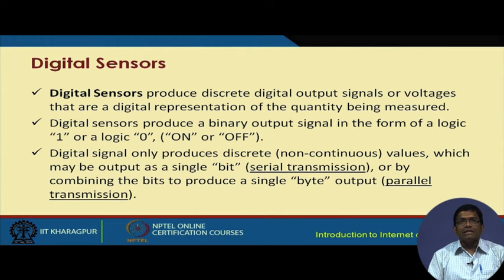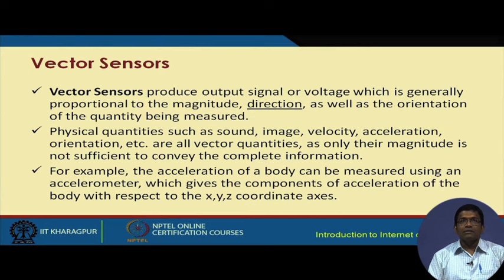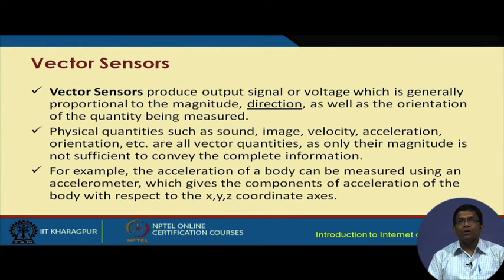Digital sensors produce digital discrete voltage or signal levels — binary values like zero and one, or on and off. Scalar sensors measure only the magnitude of physical quantities such as temperature, color, pressure, and strain. Vector sensors produce an output signal generally proportional to both the magnitude and the direction or orientation of the quantity being measured. Physical quantities such as sound, image, velocity, acceleration, and orientation are vector quantities whose measurement depends on both magnitude and direction.